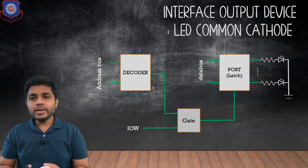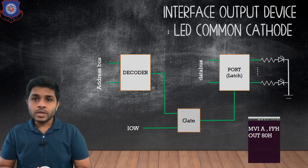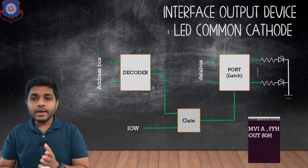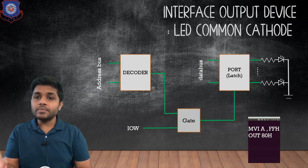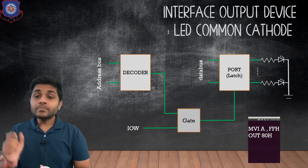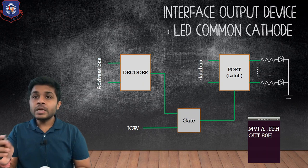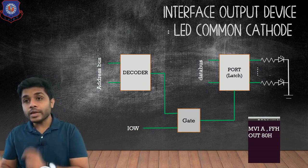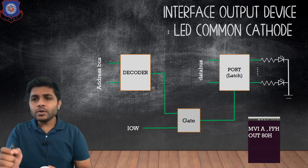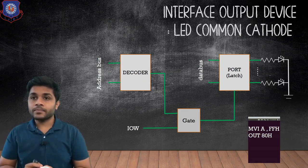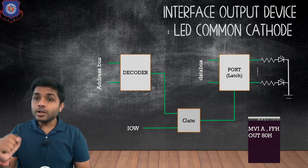The anode part of the LED is not connected together; the anode part is connected separately to one side of the port. Now let's see how to glow all the LEDs. The program goes like: MVI A, FFH and OUT ETH. MVI A FFH means the FFH data will be stored in the accumulator. OUT ETH means the data in the accumulator will be transferred to the port and to the LEDs. Because the LEDs are connected in common cathode configuration, whenever we send a 1 to the LED it will glow. If you convert FFH into binary you will get all ones.